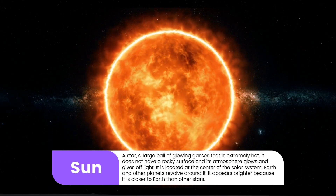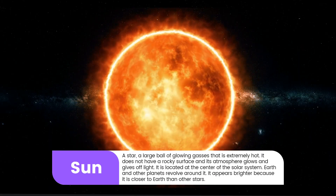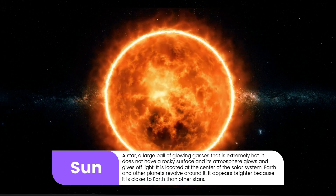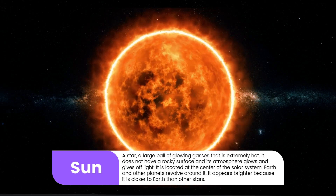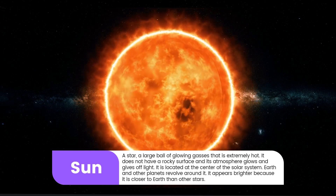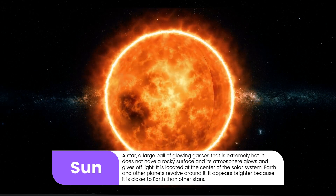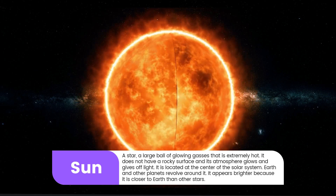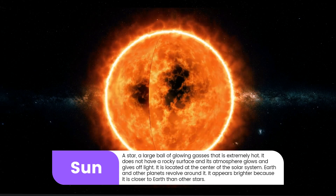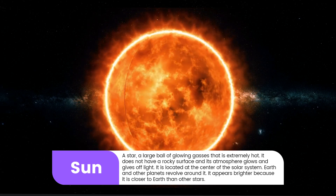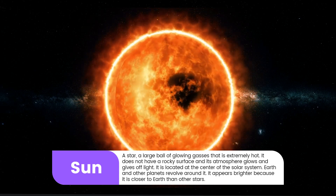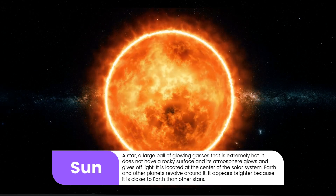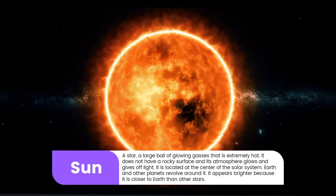3. Sun: A star, a large ball of glowing gases that is extremely hot. It does not have a rocky surface and its atmosphere glows and gives off light. It is located at the centre of the solar system. Earth and other planets revolve around it. It appears brighter because it's closer to Earth than other stars.